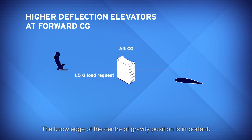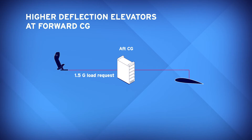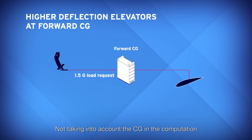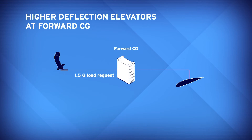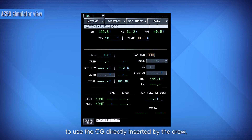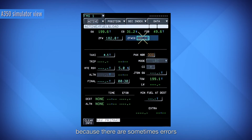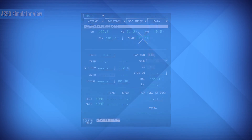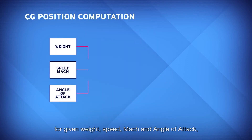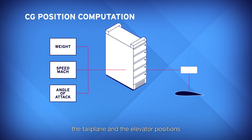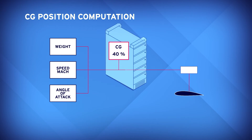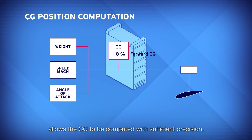The knowledge of the center of gravity position is important. At a given speed, the elevator deflection to obtain a load factor is different at forward and aft center of gravity. Not taking into account the CG in the computation leads to an immediately incorrect deflection of the elevators to reach the pilot's target. It is not possible to use the CG directly inserted by the crew because there are sometimes errors and it could have adverse effects on handling. In flight, for given weight, speed, Mach, and angle of attack, the tailplane and elevator positions are a direct function of CG position. Therefore, thanks to a simplified aerodynamic model, knowledge of all these parameters allows the CG to be computed with sufficient precision.